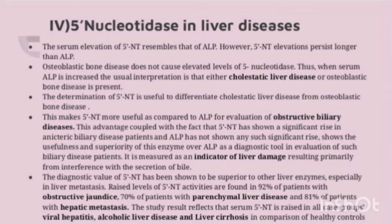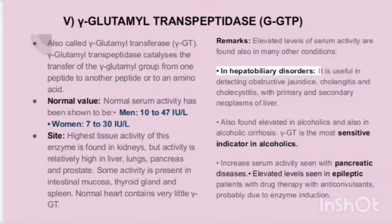5'-Nucleotidase has shown a significant rise in anicteric biliary diseases where ALP has not, showing its superiority as a diagnostic tool. It is measured as an indicator of liver damage resulting from interference with bile secretion. Its diagnostic value has been shown to be superior to other liver enzymes especially in liver metastasis, with raised enzyme activity found in 92% of patients with obstructive jaundice. Patients with parenchymal liver disease, hepatic metastasis, viral hepatitis, alcoholic liver disease, and liver cirrhosis also show higher levels.